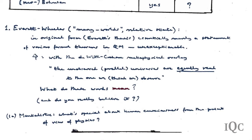Later, DeWitt and Graham wrote a second RMP paper where they put a very strong metaphysical overlay on the formalism.